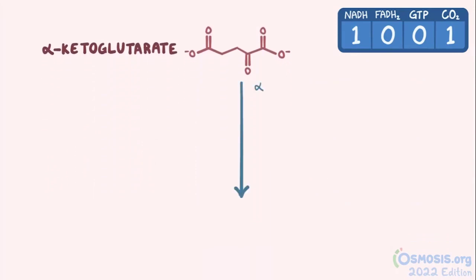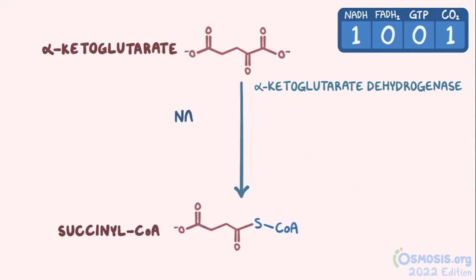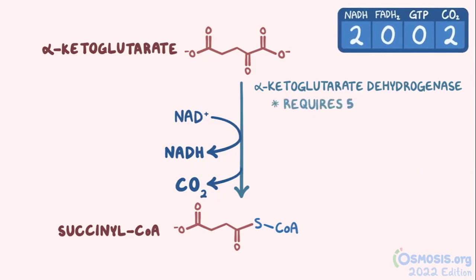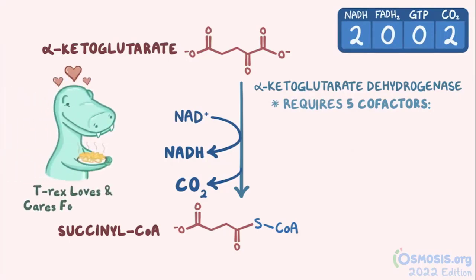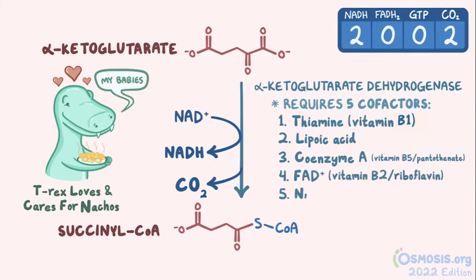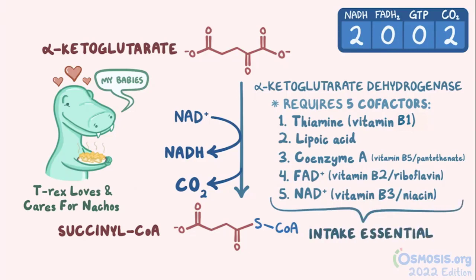Next, another dehydrogenase called alpha-ketoglutarate dehydrogenase converts the 5-carbon alpha-ketoglutarate to the 4-carbon succinyl-CoA, releasing our second NADH and carbon dioxide in the process. This enzyme requires five cofactors to function, and you can remember them by the mnemonic 'T-rex loves and cares for nachos': T for thiamine (vitamin B1), L for lipoic acid, C for coenzyme A (also called vitamin B5 or pantothenate), F for FAD+ (vitamin B2 or riboflavin), and N for NAD+ (vitamin B3 or niacin). Adequate intake of these vitamins is essential, because deficiencies can disrupt the citric acid cycle and impact overall health.